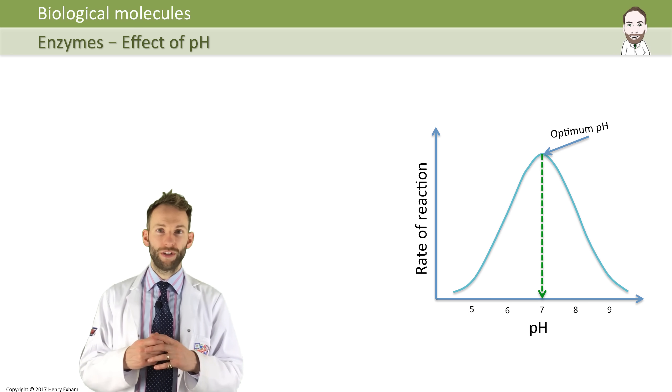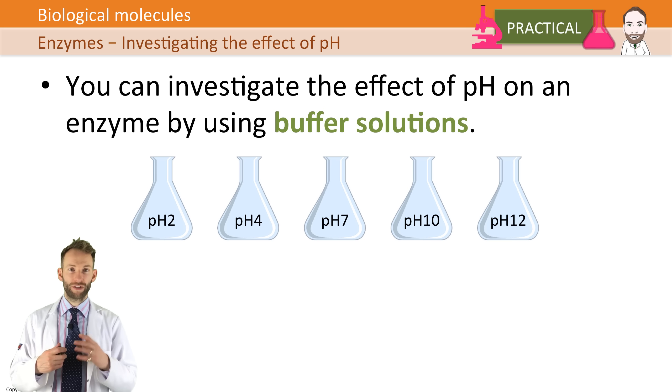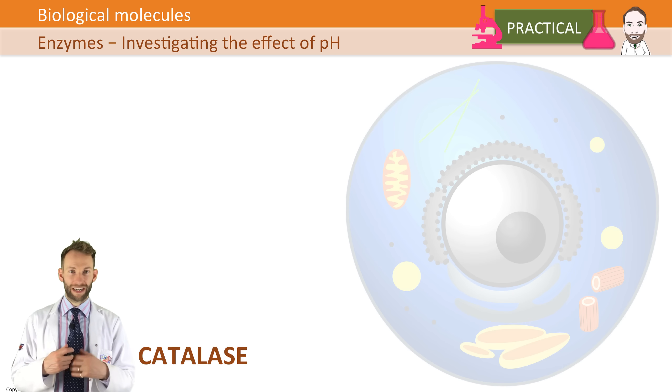A nice practical that you could do for the pH example would be to use buffer solutions, which you can use to maintain a range of different pHs, and then to investigate something called catalase.